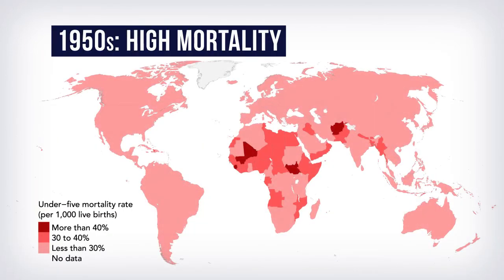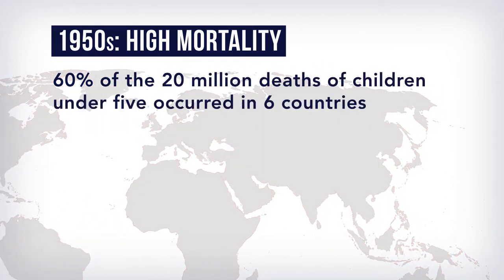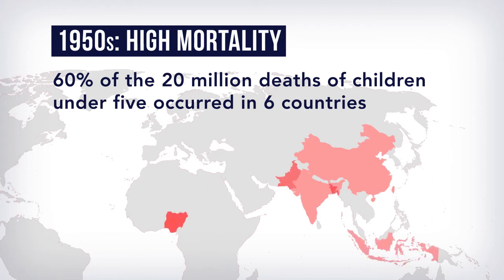In the 1950s, developing regions showed high mortality and fertility. We saw high child mortality in most parts of the developing world. In fact, almost 40% of newborns died before reaching their fifth birthday in these countries. 60% of the 20 million deaths of children under 5 occurred in just 6 countries: China, India, Indonesia, Nigeria, Bangladesh, and Pakistan.